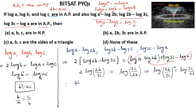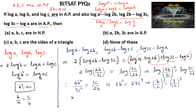Therefore, 4B squared upon 9C squared is equal to 3C upon 2B. By cross multiplication, 8 times B cubed is equal to 27 times C cubed. Or we can write (B/C) cubed is equal to (3/2) cubed. So B upon C is equal to 3 upon 2. And here also we can write B upon C is equal to A upon B. So we can conclude A upon B equals B upon C equals 3 upon 2.